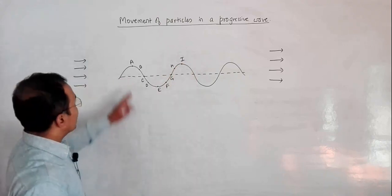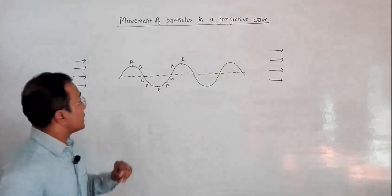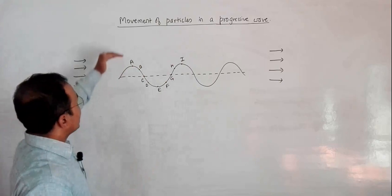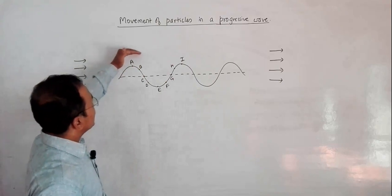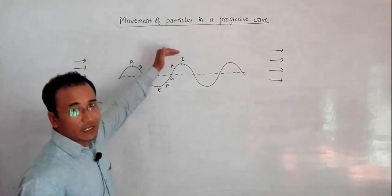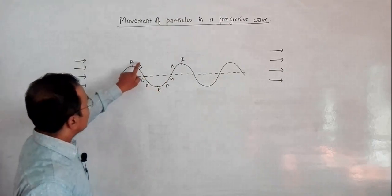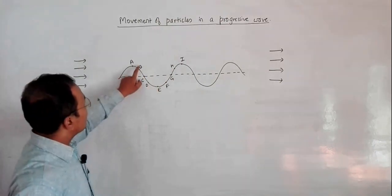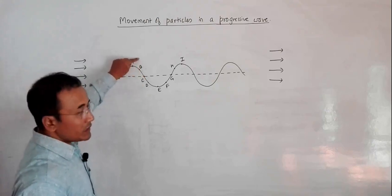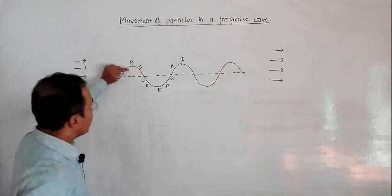Particle I is similar to particle A. Now, if the wave is going in this direction, it means the crest should shift to this side. This means that B should come to the top — B should rise. If the crest comes to B, then A should fall.